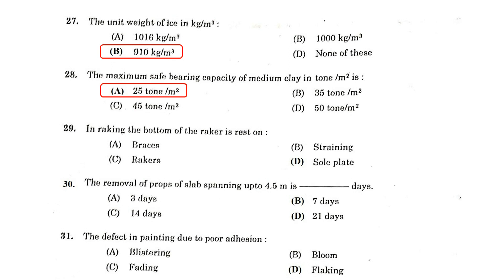In raking, the bottom of the raker rests on a soleplate. The removal of props of slab spanning up to 4.5 meters takes 7 days. The defect in painting due to poor adhesion is known as flaking.